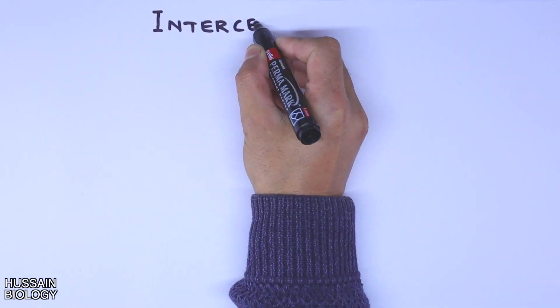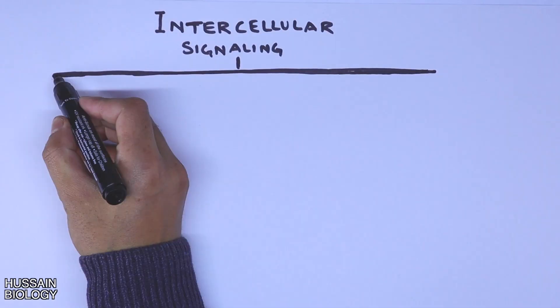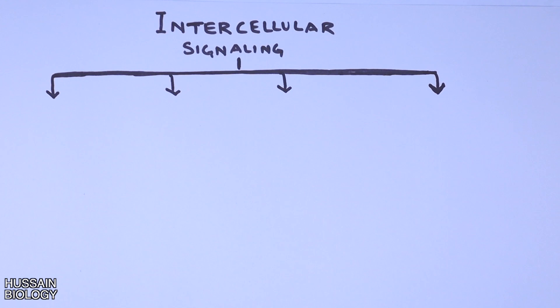In this video on cell signaling, we will be discussing intercellular signaling. It is cell-to-cell communication through binding or through mediated molecules, what we call signaling molecules. If we look at the types of intercellular signaling, we divide it into four types.